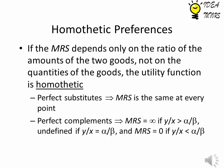If the MRS depends only on the ratio of the amounts of the two goods, not on the quantities of the goods, the utility function is homothetic. Here we are only interested in the ratio of goods y and x, not the amount of x or amount of y.